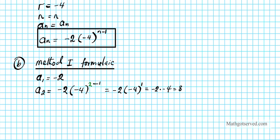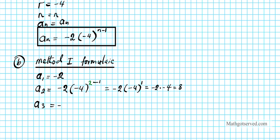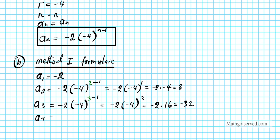For a3, plug in n equals three: negative two times negative four raised to three minus one, which is negative two times negative four squared, equaling negative two times sixteen, giving negative thirty-two. For a4, plug in n equals four: negative two times negative four raised to four minus one, which is negative two times negative four cubed, equaling negative two times negative sixty-four, giving negative one twenty-eight.